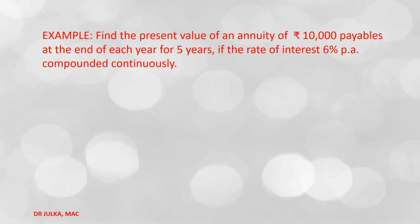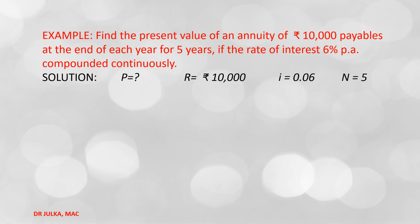One more example on present value where interest is compounded continuously. Find the present value of an annuity of Rs. 10,000 payable at the end of each year for 5 years if the rate of interest is 6% per annum compounded continuously. In this example, annuity amount R = Rs. 10,000, interest rate r = 0.06, number of years n = 5, and we want to calculate the present value P.